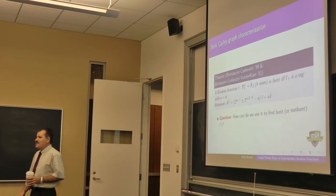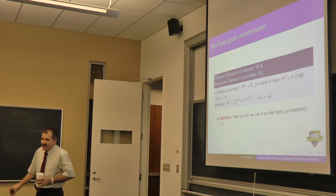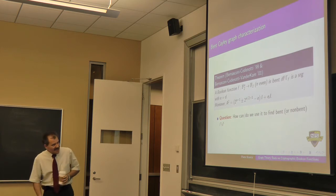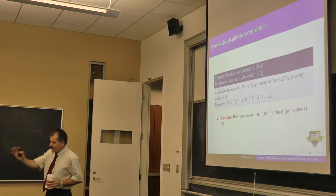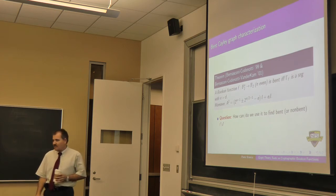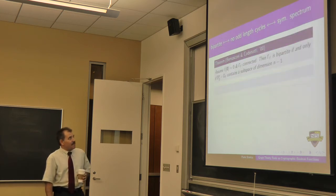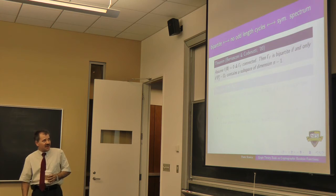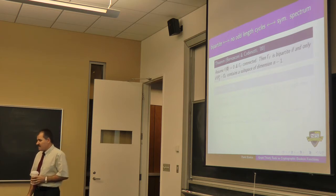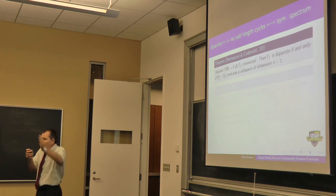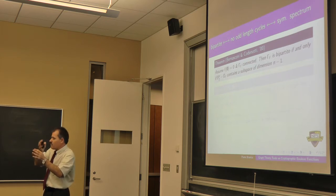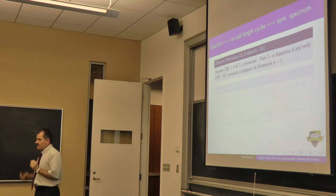How do we use this to find bent functions or check bentness? In the same paper, they showed that Γ_f is bipartite if and only if the complement of the support contains a subspace of dimension n−1. That means the elements in the support are somewhat uniformly distributed — not a good function. If you give me a Cayley graph and it's bipartite, I'm pretty much sure it's not good from a crypto perspective.